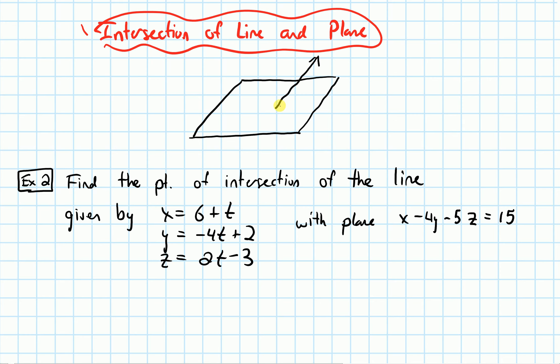it's going to intersect the plane at a certain point. Then I'm going to draw a dashed line to indicate now it's sort of under it, I can't really see it, and then it comes out. So we have this line intersecting the plane.